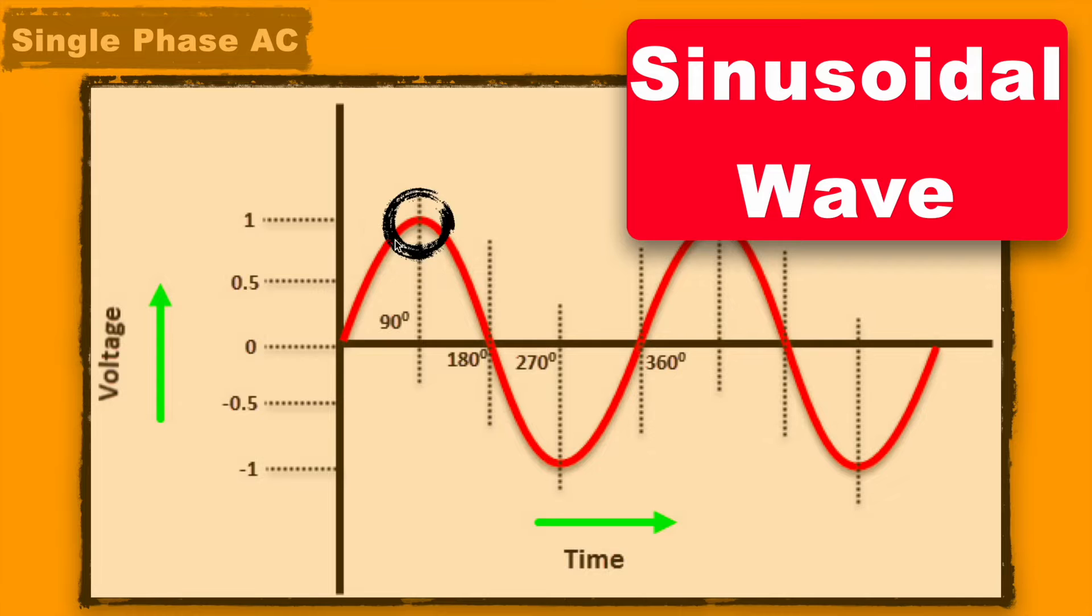While on the positive side its value peaks at 90 degrees and on negative side its value peaks at 270 degrees. Here 1 and minus 1 are just for reference; the actual voltage value at positive side is 230 volts and negative side minus 230 volts.